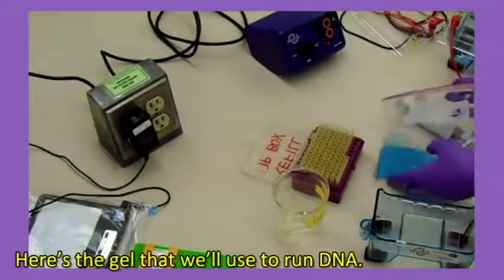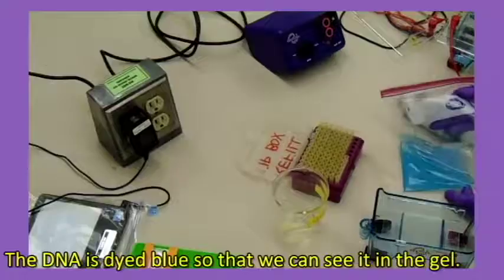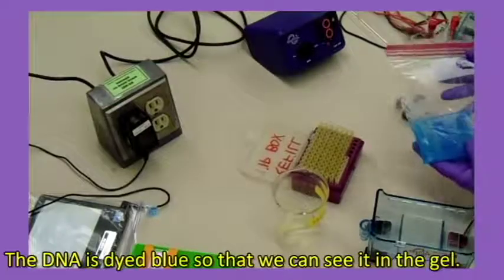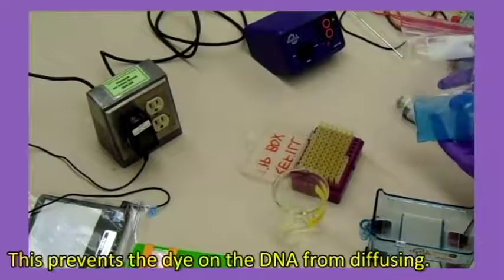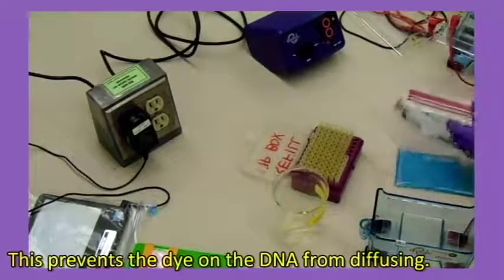Here's the gel that we'll use to run DNA. The DNA is dyed blue so that we can see it in the gel. Both the buffer and the gel are colored with the same dye. This prevents the dye on the DNA from diffusing.